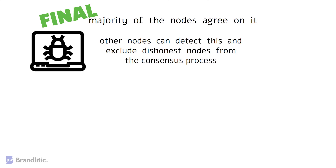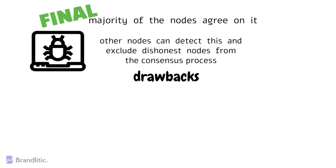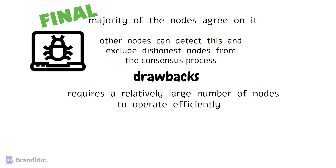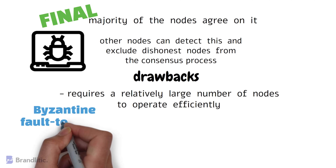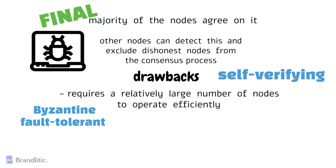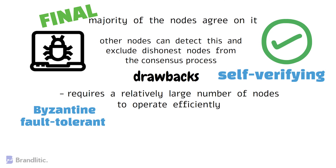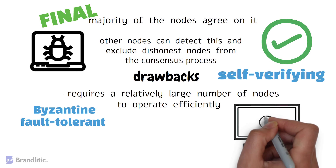Although PBFT is a promising solution, it does have a few drawbacks. One is that it requires a relatively large number of nodes to operate efficiently. Also, PBFT assumes that nodes are not only Byzantine fault tolerant but also self-verifying, which means they can detect if they have been hacked and report it to the other nodes. This can be difficult to achieve in real-world scenarios.